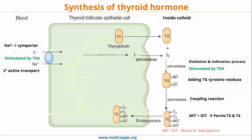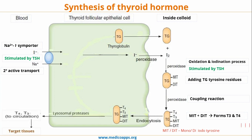the MIT and DIT are moved inside the thyroid follicular epithelial cells by the process of endocytosis. Here, inside the thyroid follicular epithelial cells, they are generally stored for about two to three months. On demand, with the help of lysosomal proteases, T3 and T4 are released into the circulation, from where they reach the target tissues.